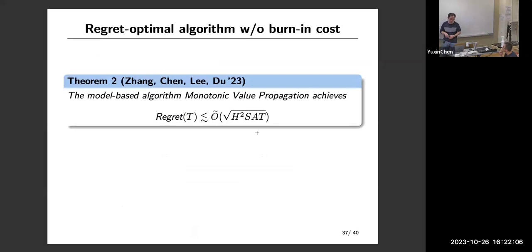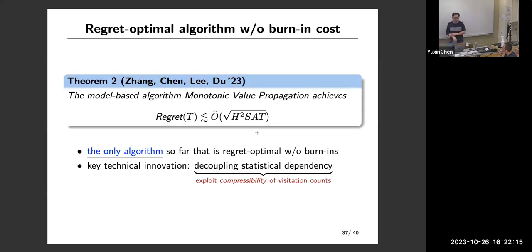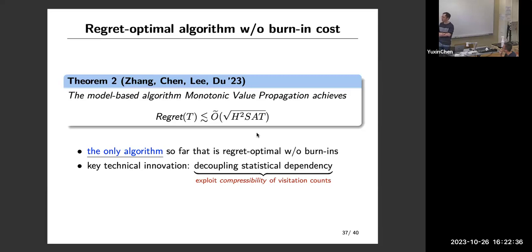The result is that this model-based algorithm achieves minimax optimality up to a logarithmic factor. So far, this remains the only algorithm in the literature able to achieve regret optimality without any burning costs. Our main technical contribution is about how to design and modify the algorithm to carefully handle statistical dependency — in the sample-limited regime, the hardest part in almost every problem is how to handle statistical correlations.